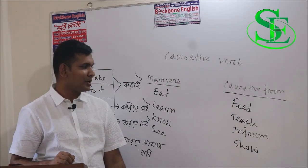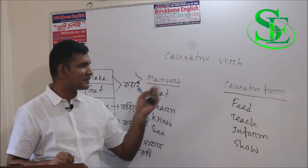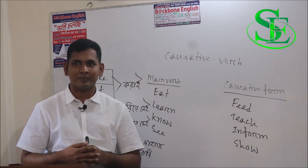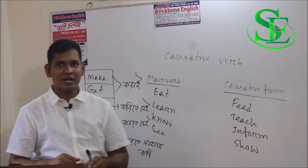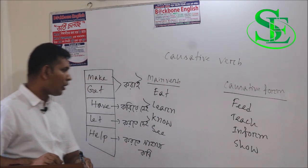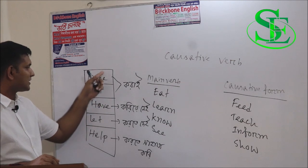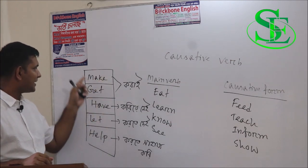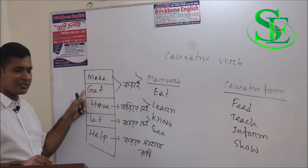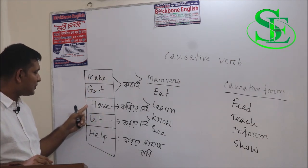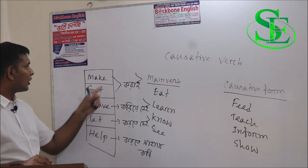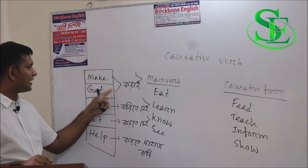But most verbs don't have any causative form. In that case, we have to take help from five causative verbs, and they are: make, get, have, let, and help.